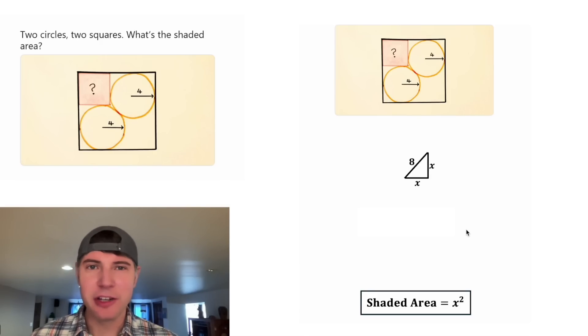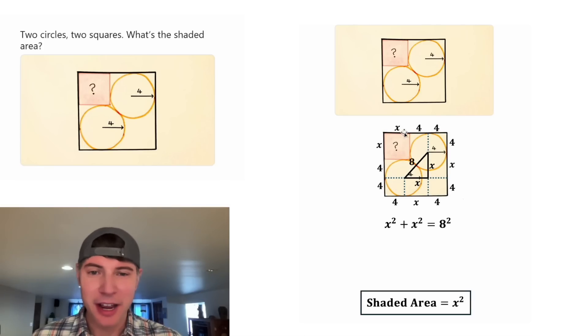It's a right triangle, so we can use the Pythagorean theorem. It'll be X squared plus X squared is equal to eight squared. And if we bring everything back, X squared, that was the area of our shaded square. So all we have to do is solve for X squared.